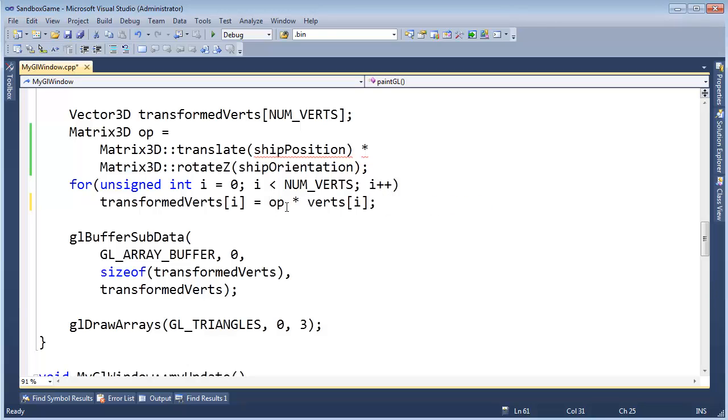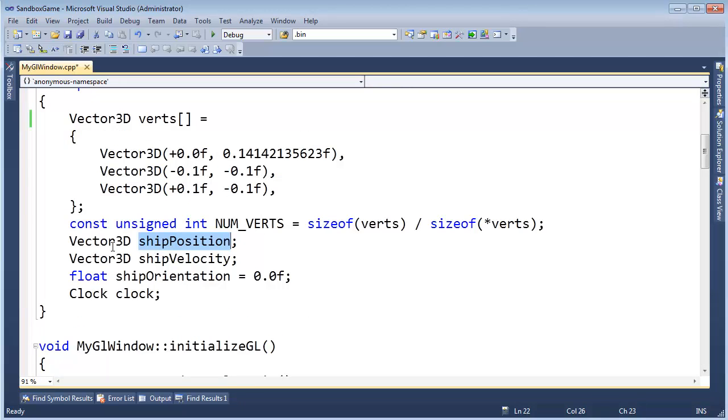I'm trying to put that translation directly here in the matrix operator. So what's the red squiggly here? I think I know why. Translate takes an X and a Y, and we're saying translate by the ship position, which we've made a vector 3, I recall. Let me click on this and hit up 12. Yes, we made it a vector 3.